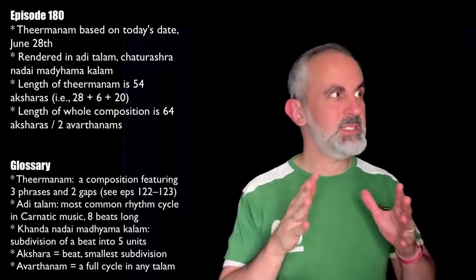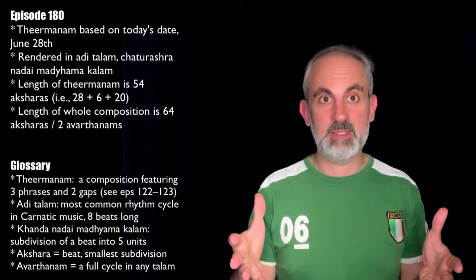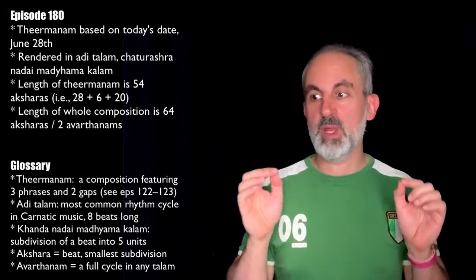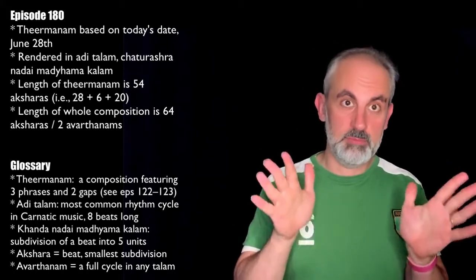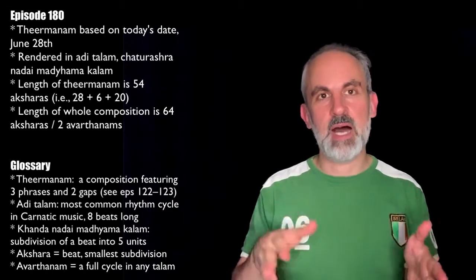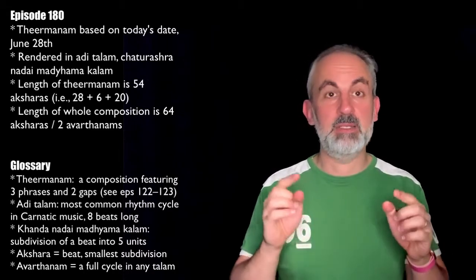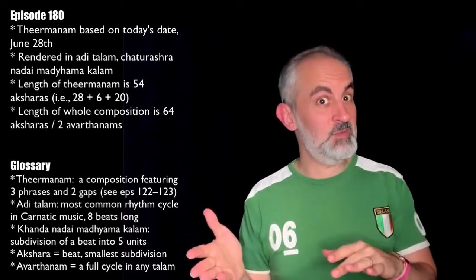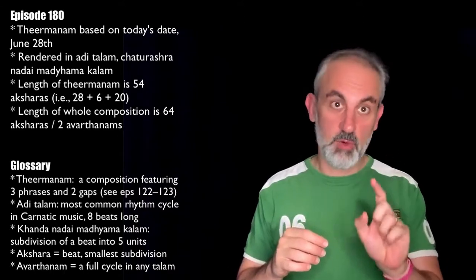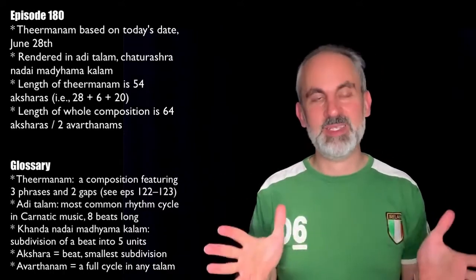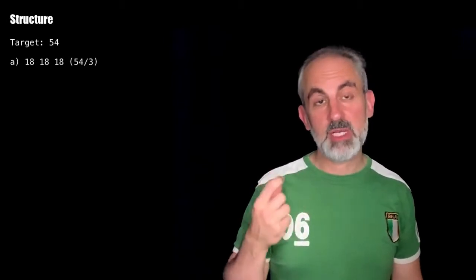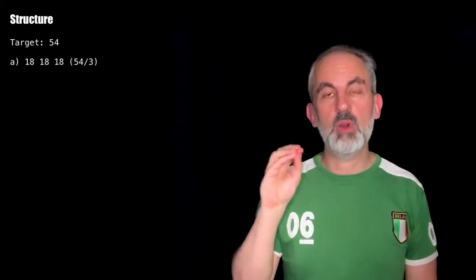The number 54 is not a full cycle of Adi talam, or a multiple of that. One full cycle of Adi talam in Chaturashra Nadai Madhyama Kalam has 32 units — 32 aksharas — and two cycles will have 64. But this composition has 54, which means we're going to have to compensate for that. So let's take a look at how to create a theermanam.